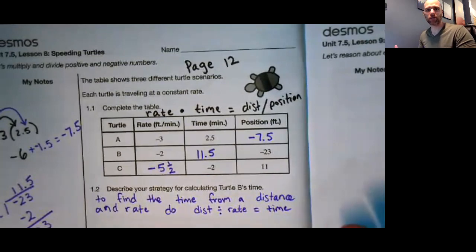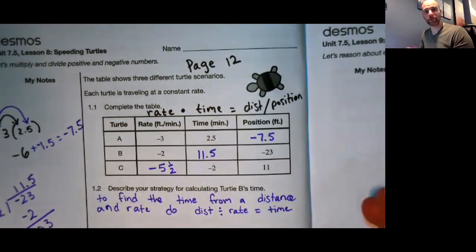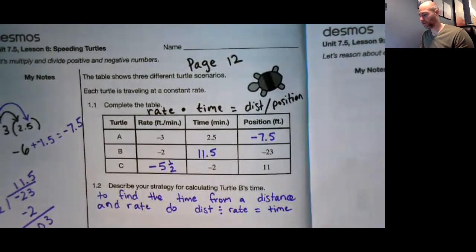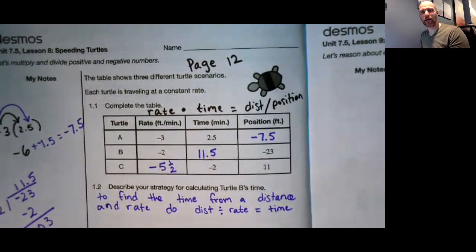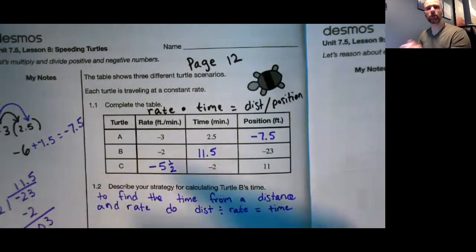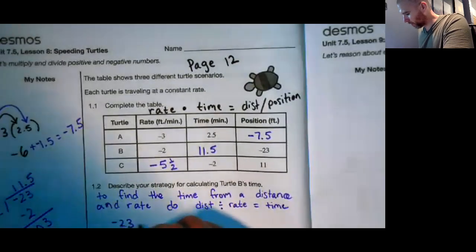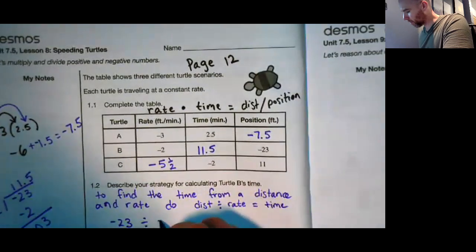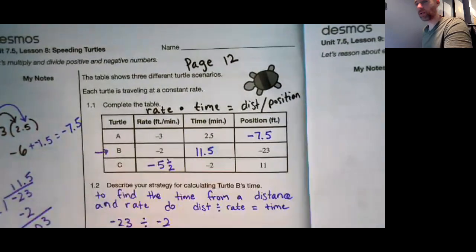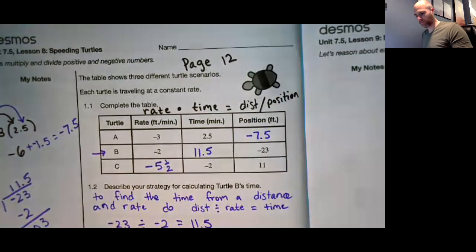A really simple example of this would be if you were going 60 miles an hour for two hours and you wanted to figure out how far you could go, you would do 60 miles an hour times two hours and you've gone 120 miles. But if I told you, you went 120 miles and you did it going 60 miles an hour, how long did that take you? Well, you could find that time by doing the 120 miles divided by the 60 miles per hour and get the two hours time. That's essentially what we're doing here.